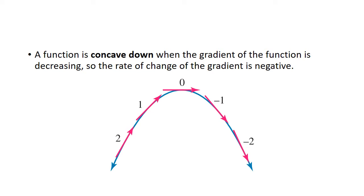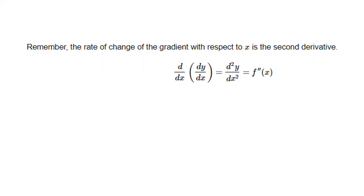A function is described as concaving down if the gradient of the function is decreasing — a negative, upside-down U. Starting here, you can see the gradient is quite positive and quite steep, but it is decreasing. It hits 0 and continues decreasing, becoming negative 1, negative 2. So the gradient is decreasing and we call this concave down. Remember, the rate of change of the gradient with respect to x is the second derivative — the gradient of the gradient is the second derivative.